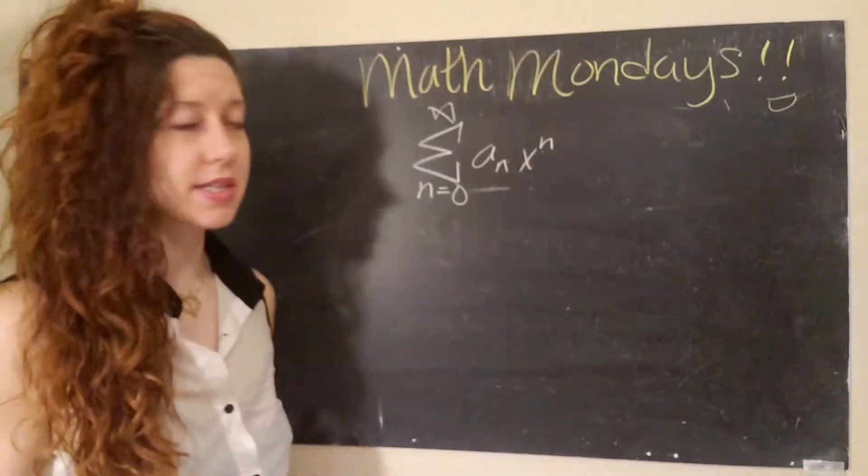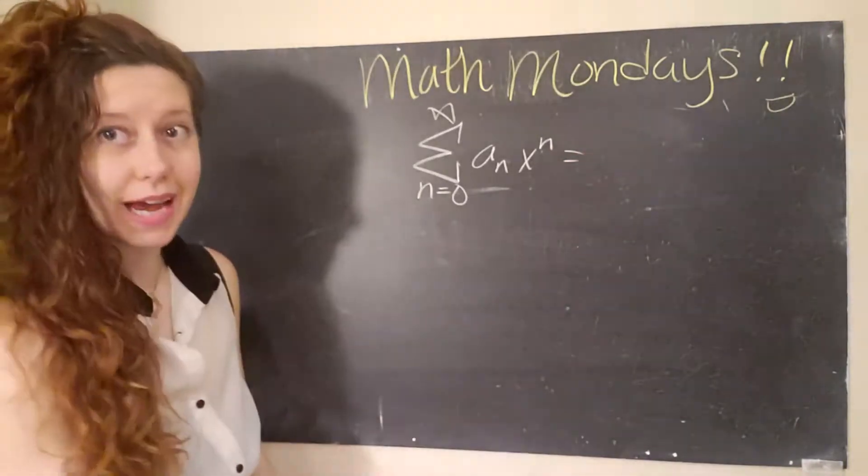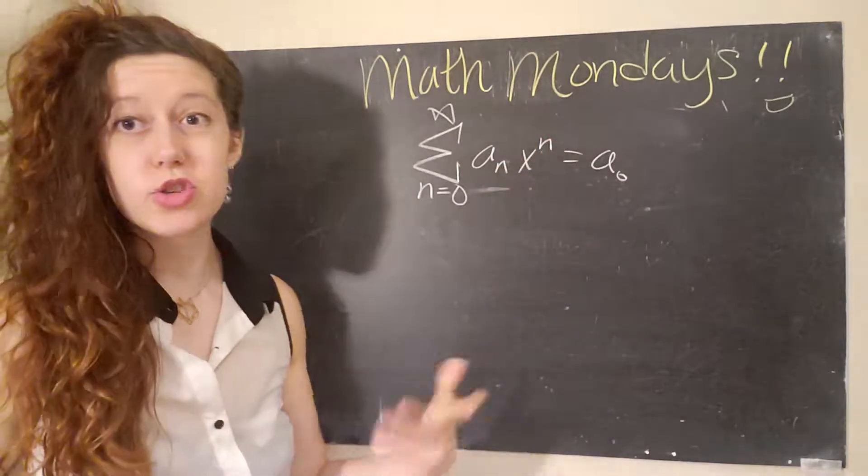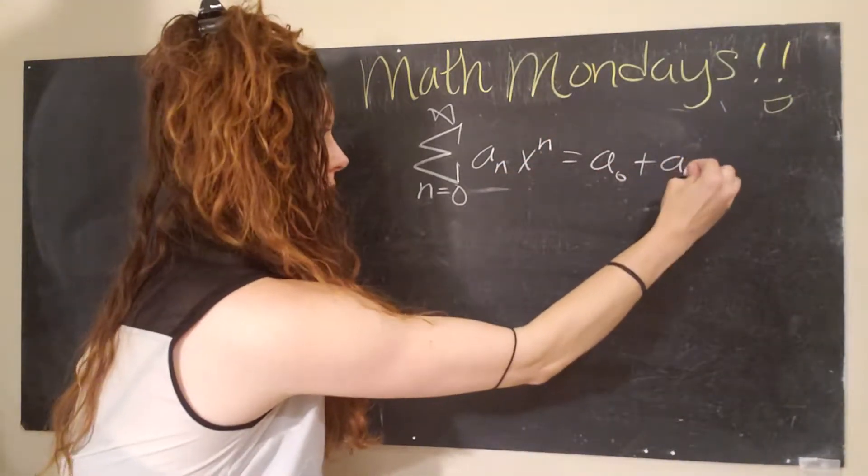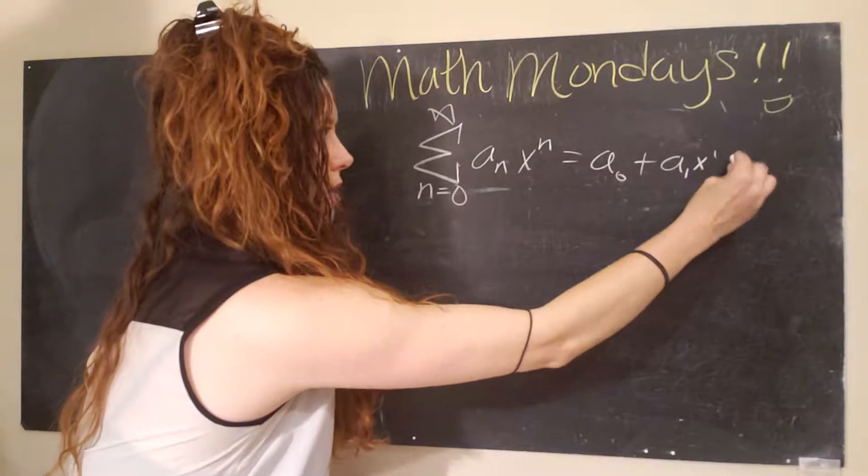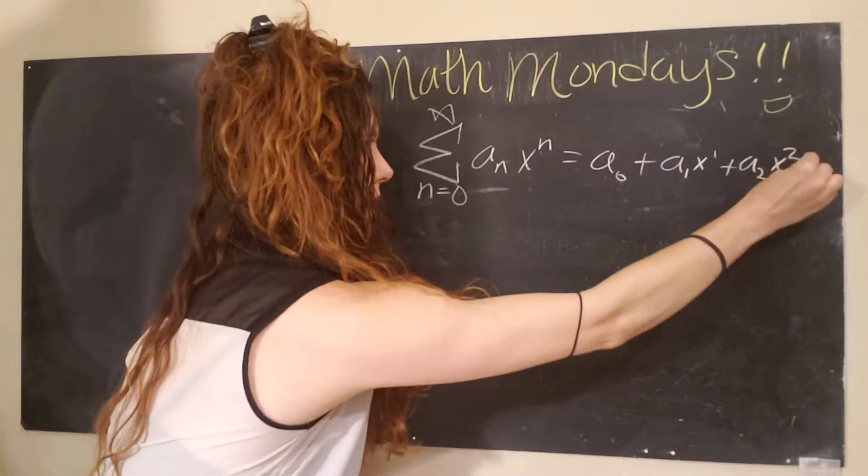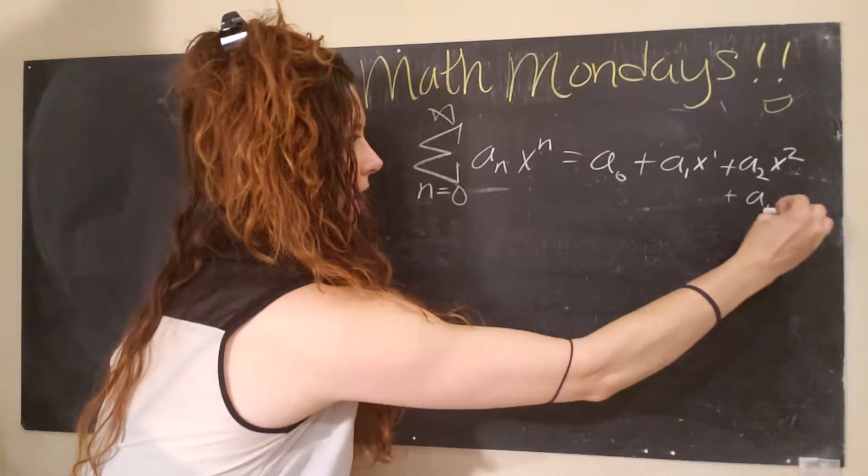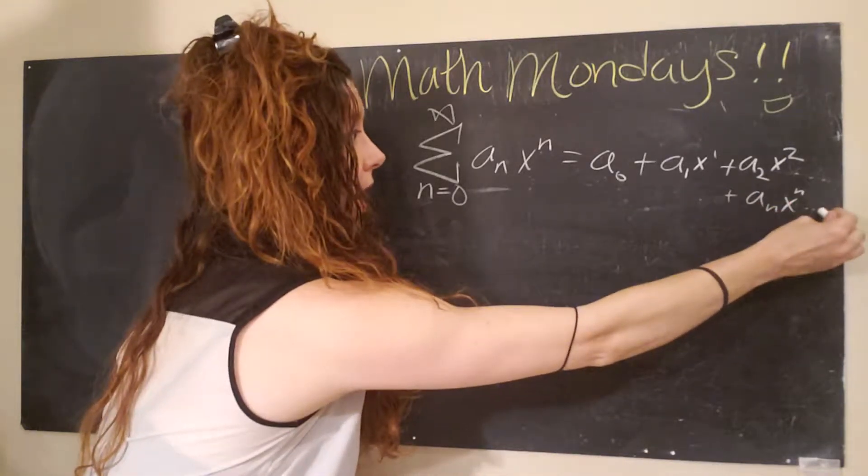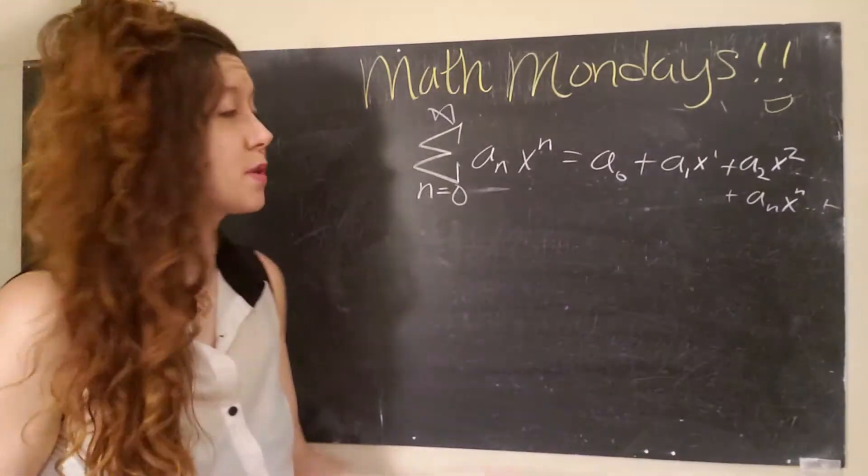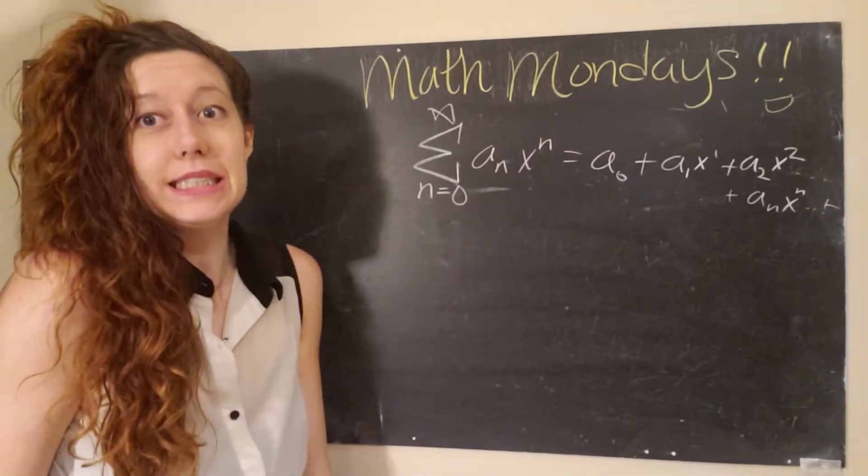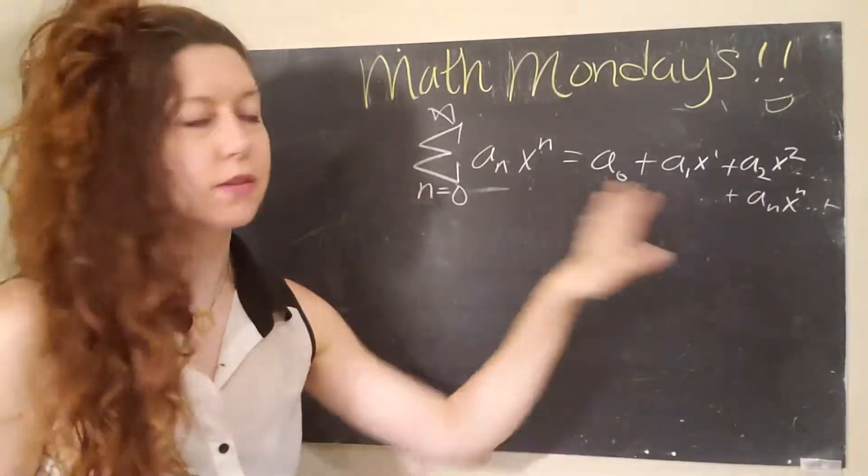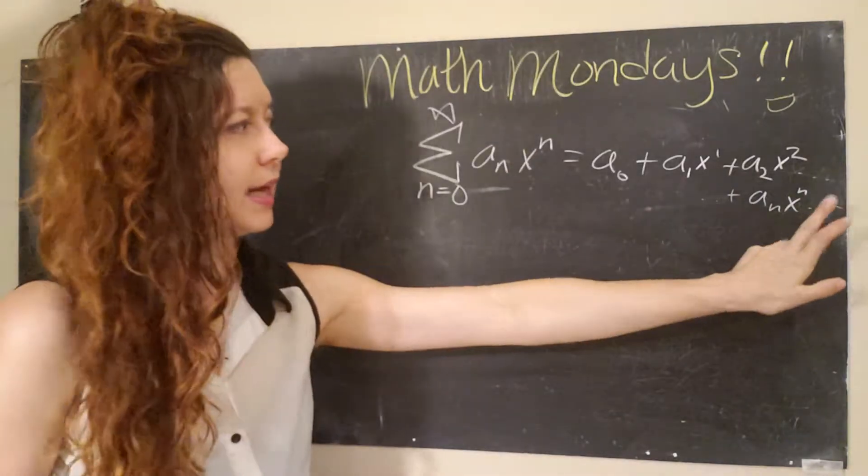And the general form looks like a subscript n times x to the nth power. And so if we were to actually write this out term by term, what we would get is a zero, because n equals zero, and x to the zero is just one. So we add our next term plus a one x one plus a two x squared, and so on. And then you would get to the point of a n x to the n. And actually, you would keep adding terms because n is not yet at infinity. Very long time. But that's okay. We use our ellipses to represent lots of terms in between. And it just keeps going.